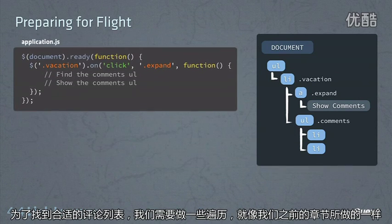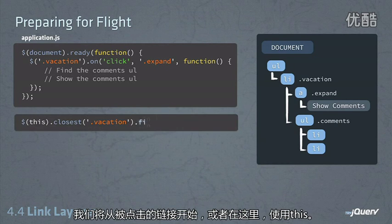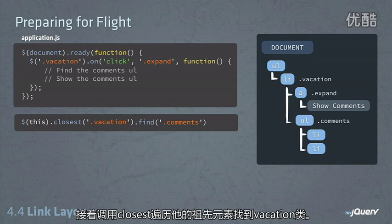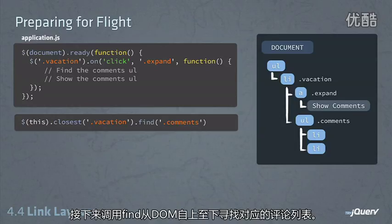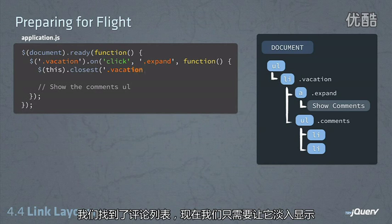To find the appropriate comments list, we need to do some traversal, like we did in previous sections. So we start with the link that was clicked — in this case, 'this', because it was what was clicked — and then call closest to search up through its ancestors to find the vacation class, and then call find to search down through the DOM to find the appropriate comments list.